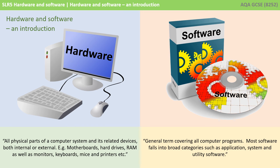Hardware is all the physical parts of a computer system and its related devices, both internal or external. So we're talking about things like motherboards, hard drives, and RAM, as well as things like monitors, keyboards, mice, and printers.